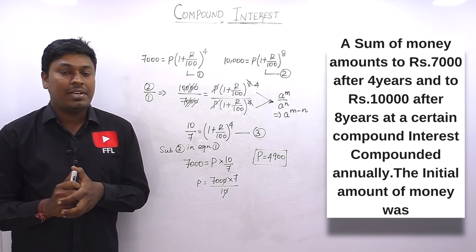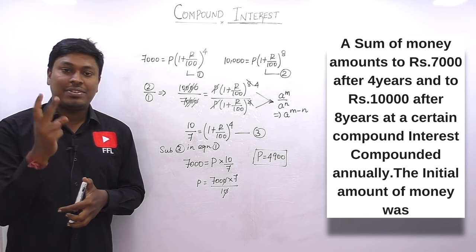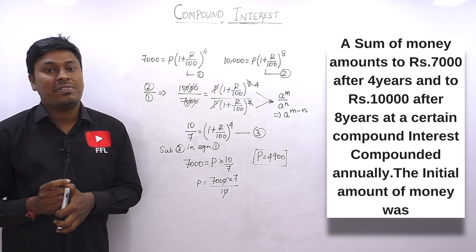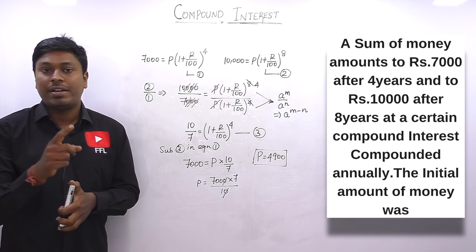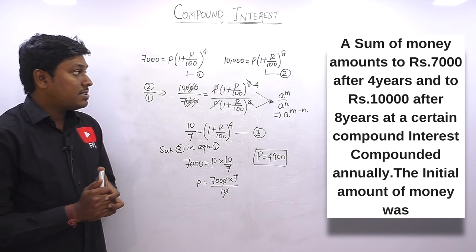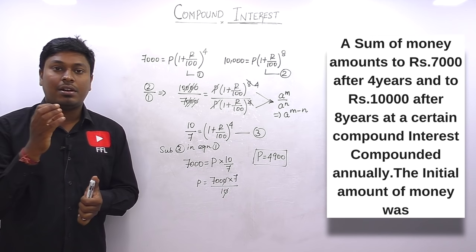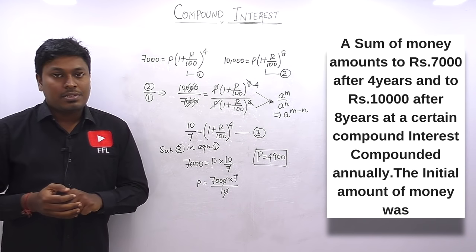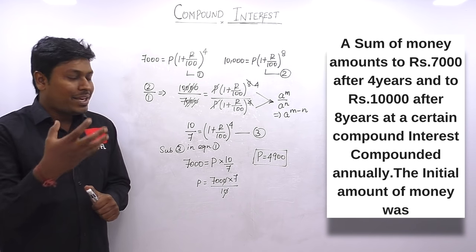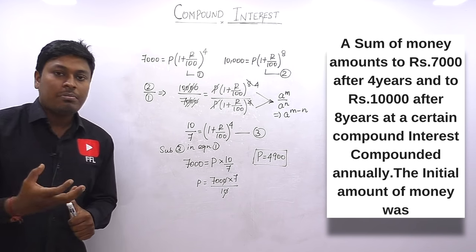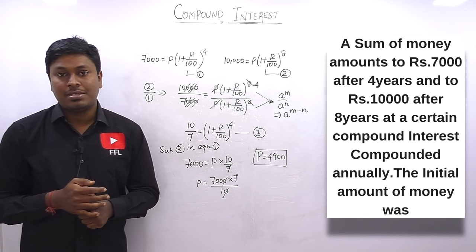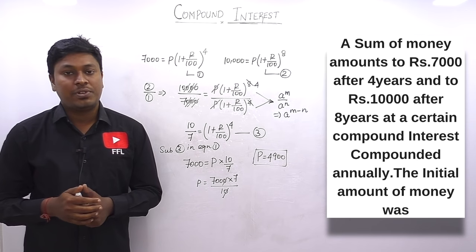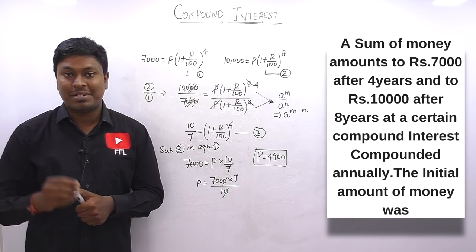In this lesson number seven, we solved three different questions: the first two found the rate of interest, and the last one found the principal. This is a very important question type for medium level exams like Railway and BSNL. After watching this video, try to solve more similar questions. Thank you so much for watching — if you liked it, share this video with your friends. Bye!